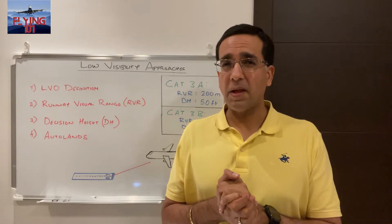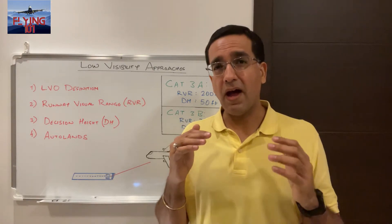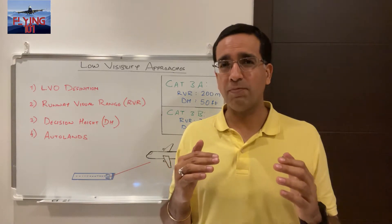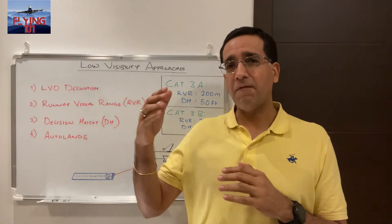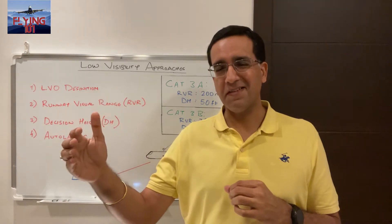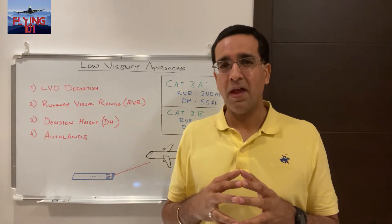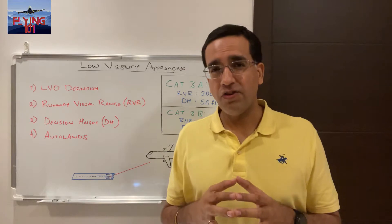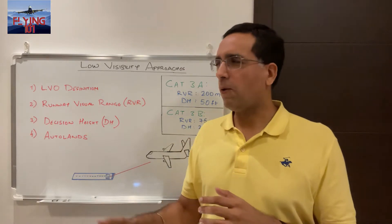Let's start off by understanding the concept of something called minima. Minima is quite simply a regulatory term that prescribes the lowest visibility and height for a given approach by which an aircraft must have obtained the external visual references to continue the approach. For a Category 3 operation, these minima consist of something called RVR and decision height, and we will cover each of these in some detail.